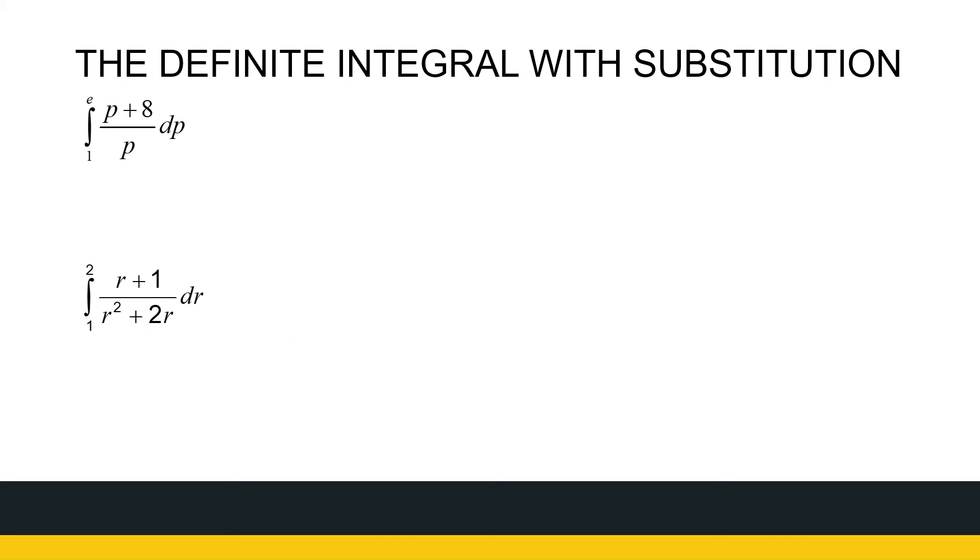Next two very similar ones, but we're going to do substitutions again for the first one. Well, the first one we don't need to do a substitution actually because I've got one element in my denominator. So that's the same as the integral from 1 to e of 1 plus 8 over p. No substitution necessary here.